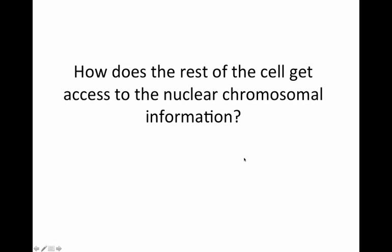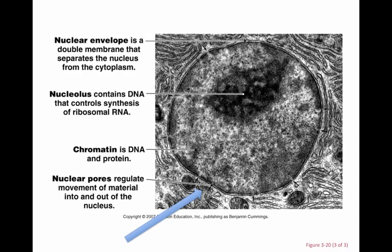How does the rest of the cell get access to the nuclear chromosomal information? If the information is in the nucleus, how does the rest of the cell gain access to it? Could it be that these pores are important for regulating the movement of material in and out of the nucleus? This is an image taken from a microscope — a micrograph showing you the nuclear envelope, the nucleolus where ribosomal RNA synthesis takes place, condensed DNA and protein, and with these arrows you get to see what these nuclear pores really look like.